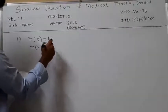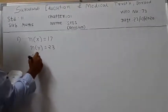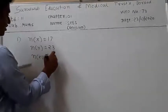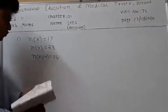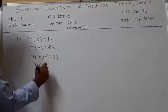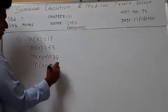First question: If X and Y are two sets such that N of X is equal to 17, N of Y is equal to 23, and N of X union Y is equal to 38, find the value of N of X intersection Y.